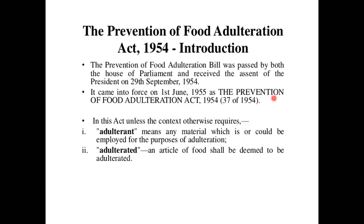Now we will see some acts related to food adulteration. The Prevention of Food Adulteration Bill was passed by both houses of parliament and received assent of the President on 29 September 1954, but it came into force on 1 June 1955 as the Prevention of Food Adulteration Act 1954. In this act, adulterant means any material which is or could be employed for the purpose of adulteration.